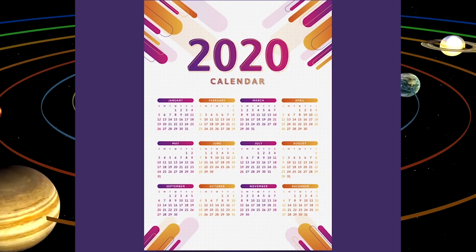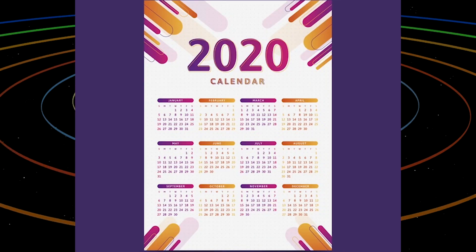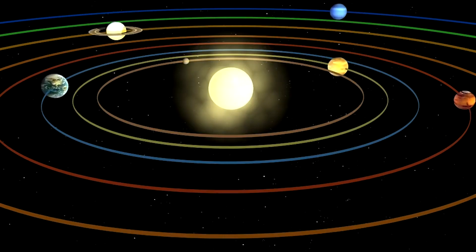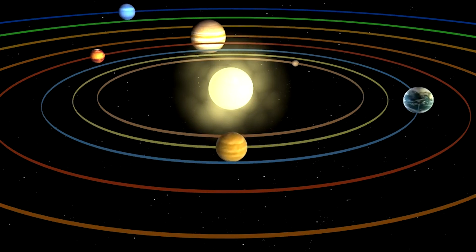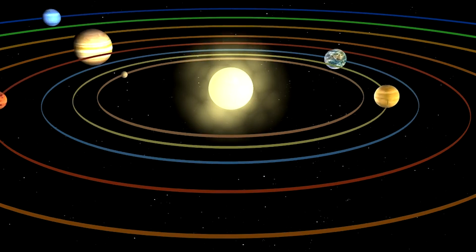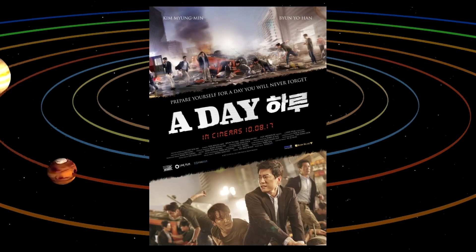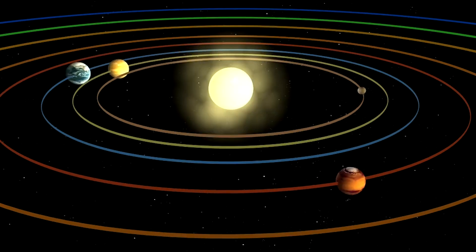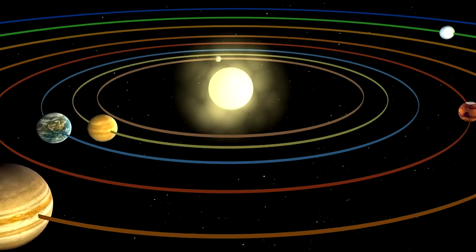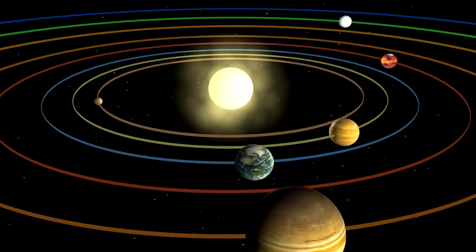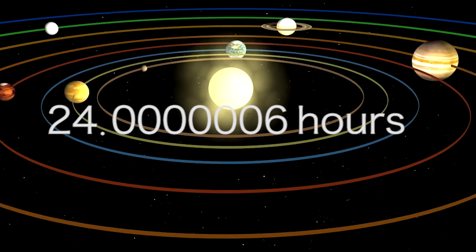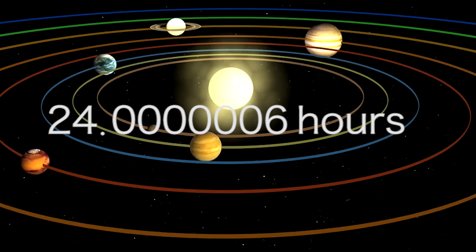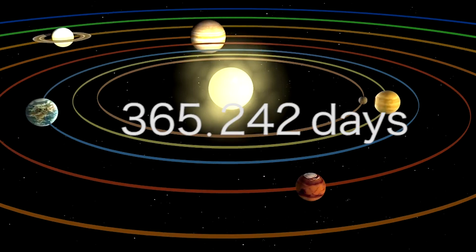A calendar is just an easy-to-read version of where the Earth is in the solar system. A day isn't a whole number — it's not exactly 24 hours, it's actually a decimal. And the same thing applies for a year.